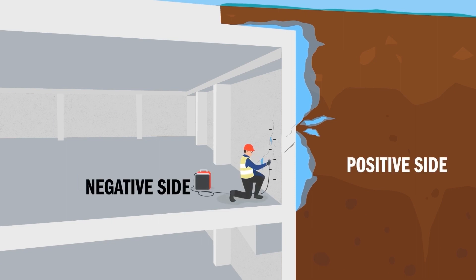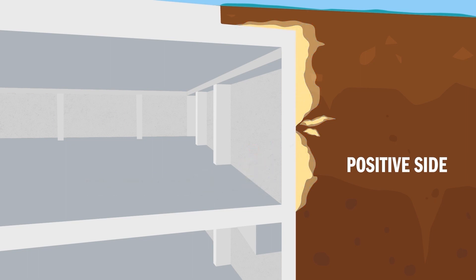Alchemy SpeedTech offers a more permanent solution to fix the leak by injecting one of Alchemy SpeedTech's resins to create a grout curtain on the positive side of the structure.